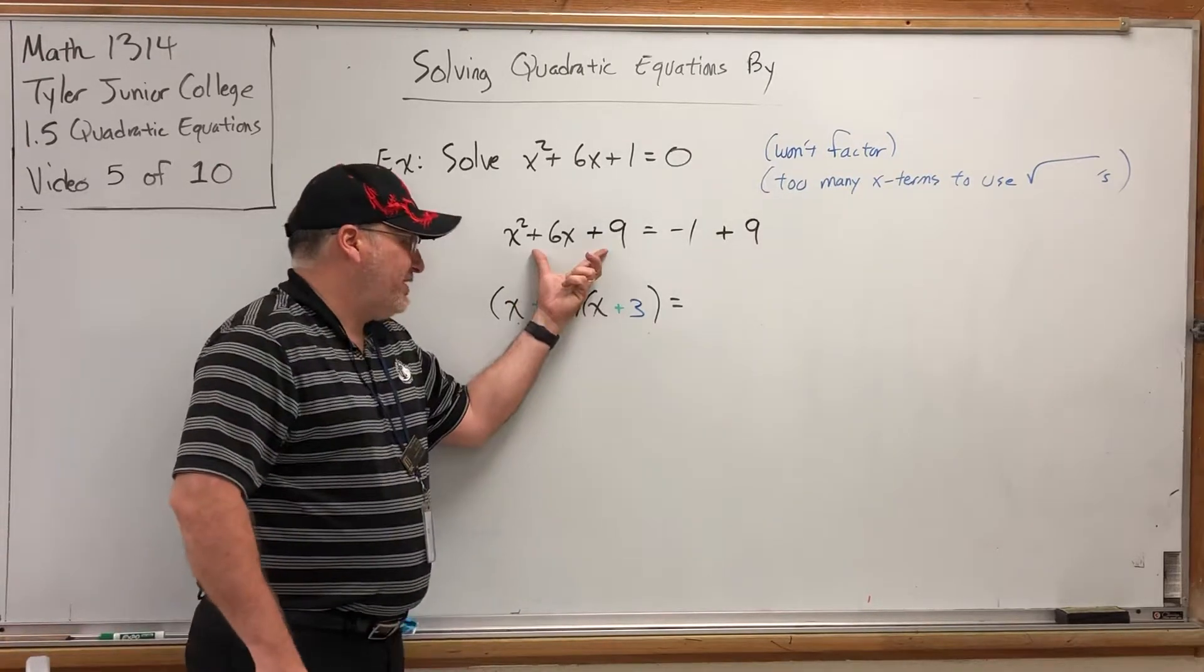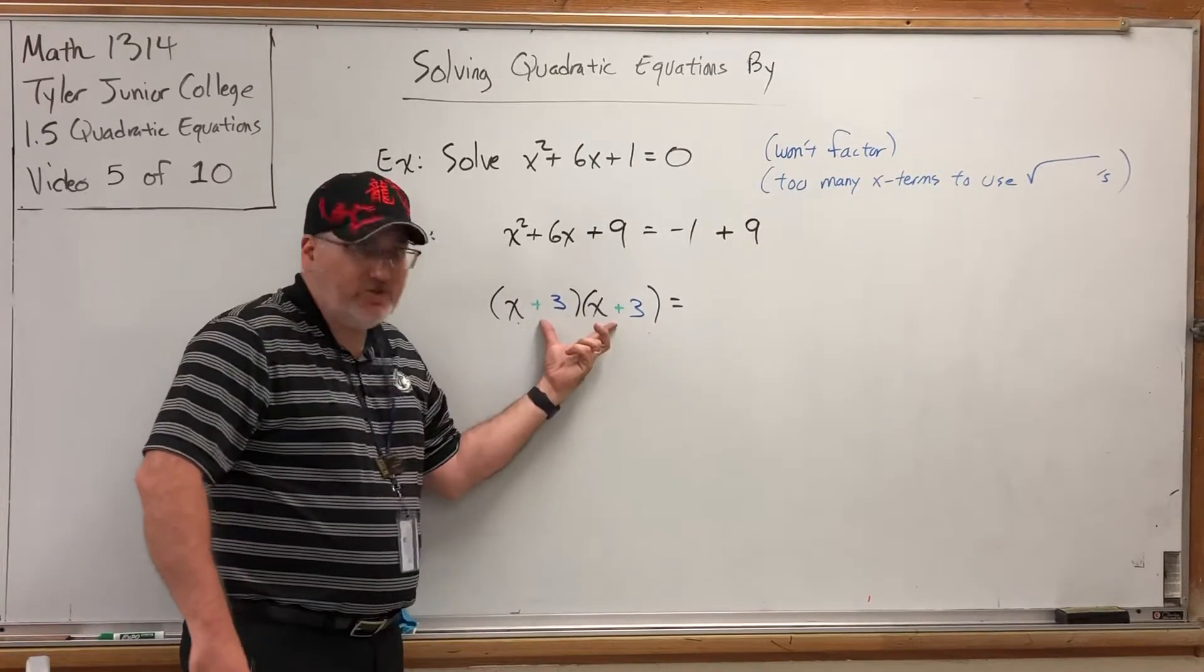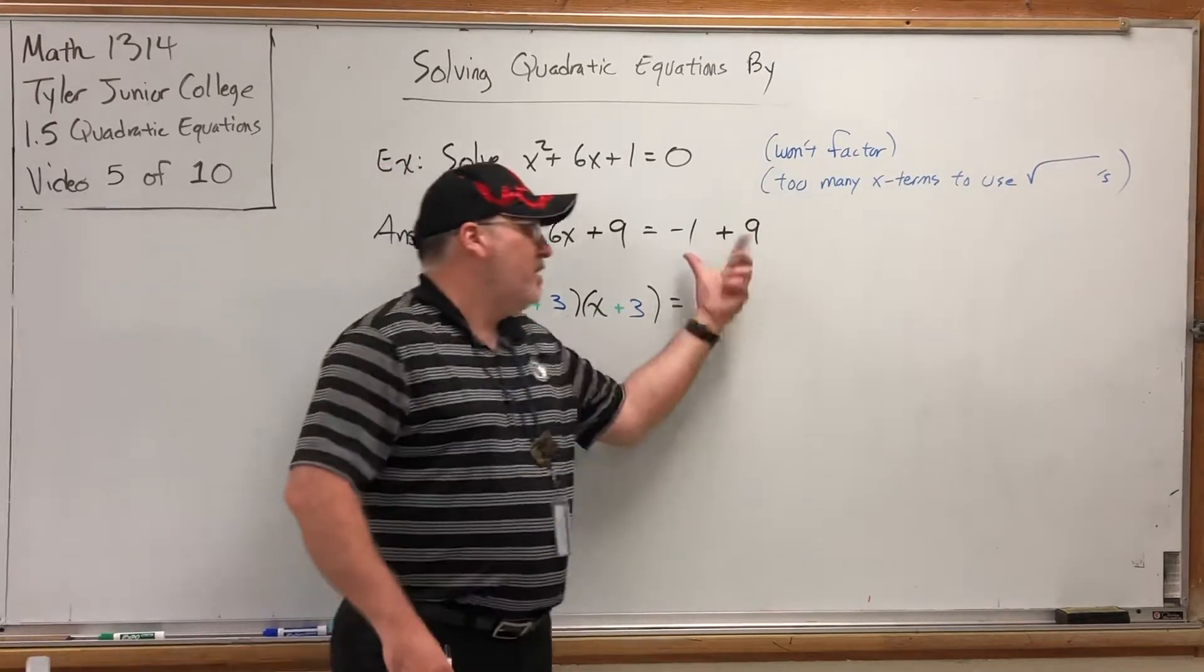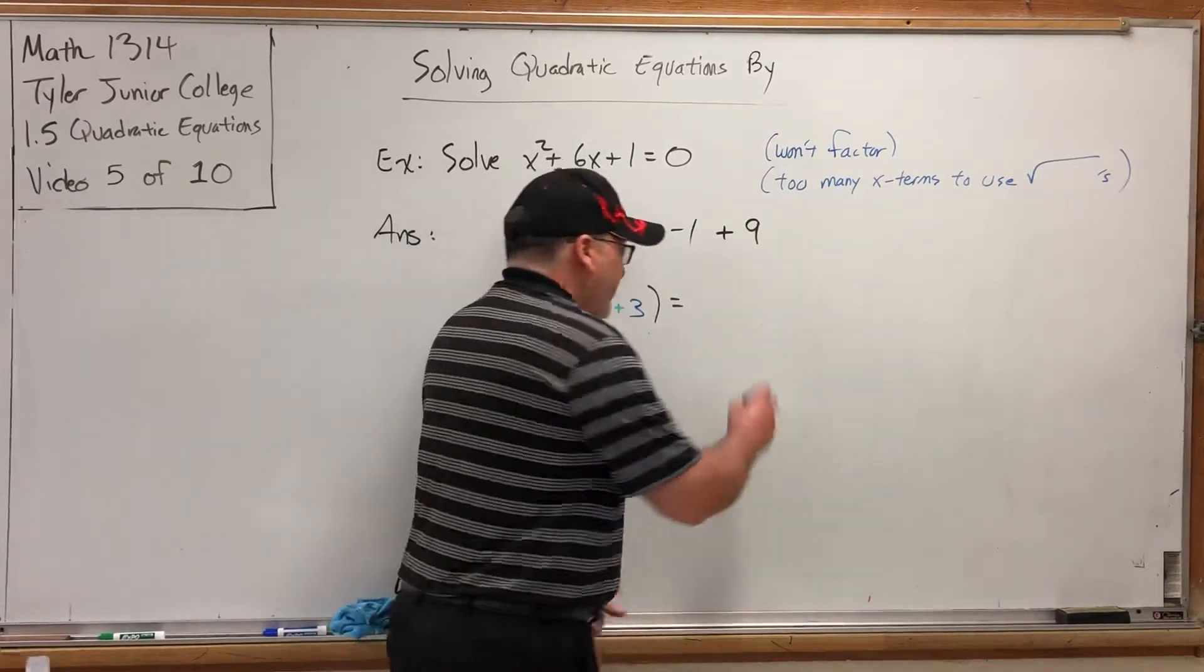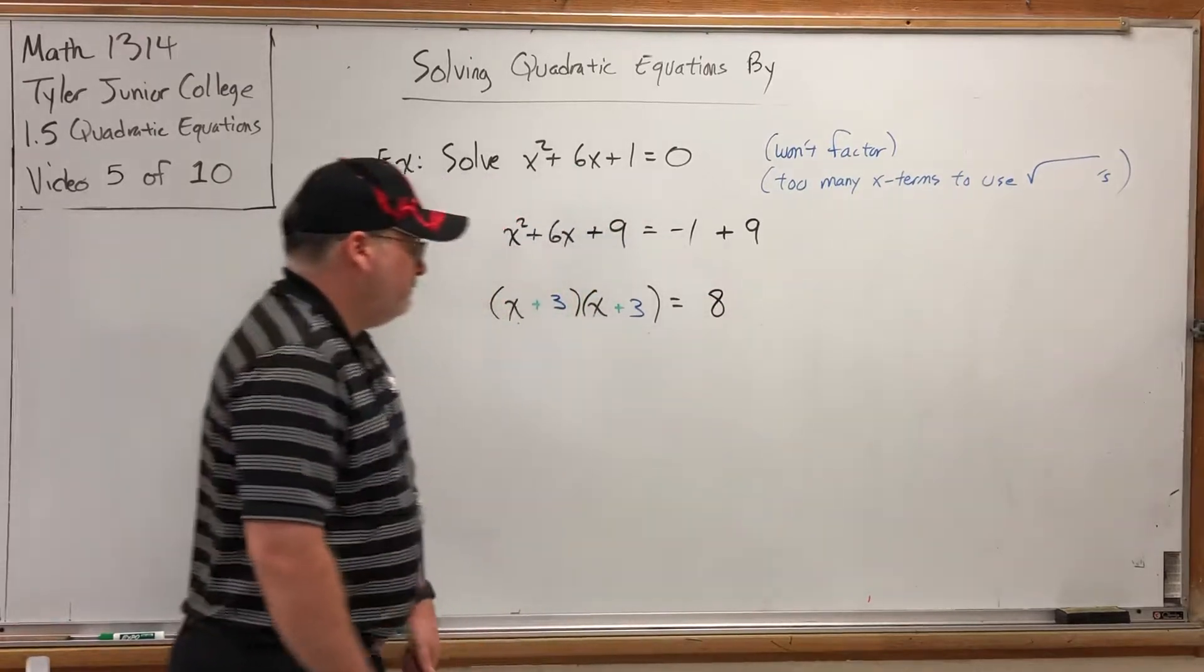Well, x squared plus 6x plus 9 will factor into x plus 3 times x plus 3. On the right side, we have negative 1 plus 9, which is 8.